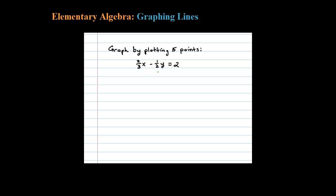We're asked to graph this linear equation by plotting five points. To do that, it's easier if we first solve for Y. So I'll subtract negative two-thirds X on both sides.